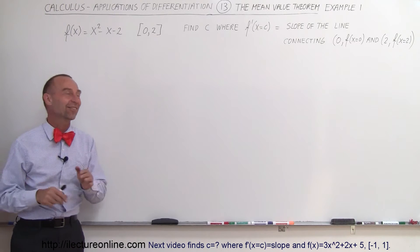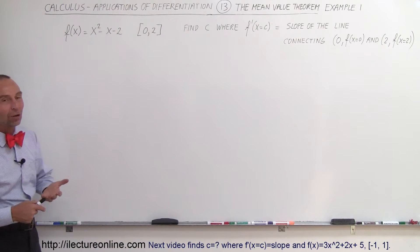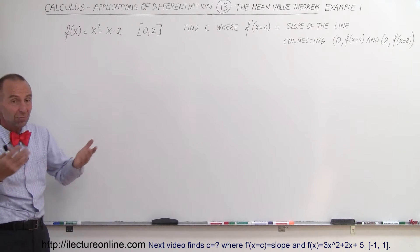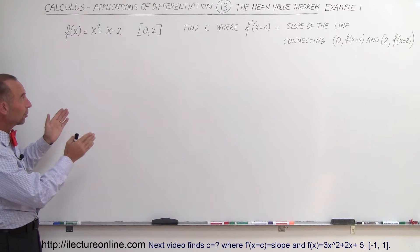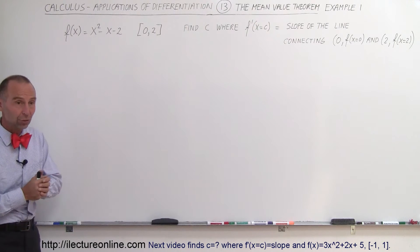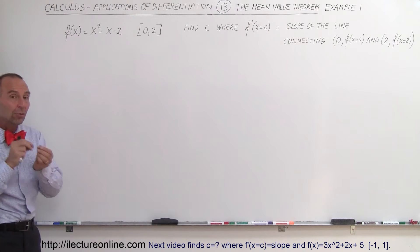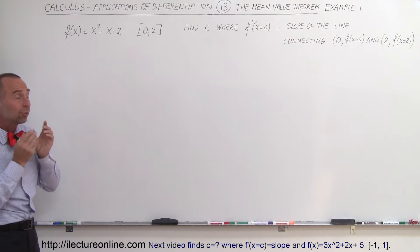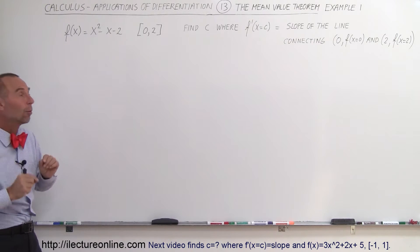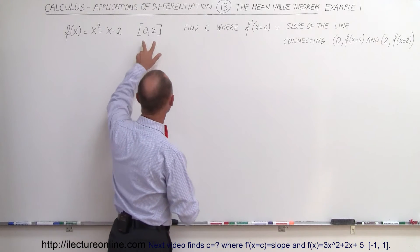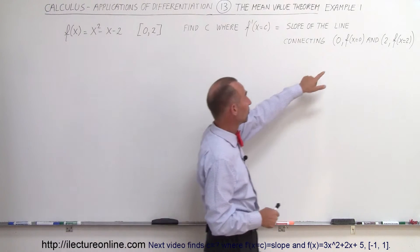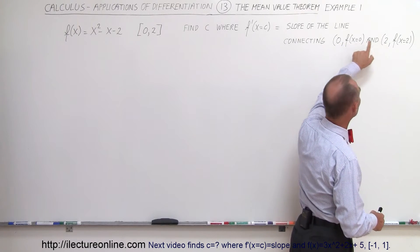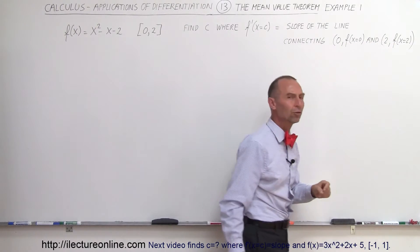Welcome to the lecture. Here's a nice example of how to implement the mean value theorem. We're supposed to find the number c on the interval between x equals 0 and x equals 2, such that when we take the derivative and plug that number in, we'll get the exact same slope as when we find the slope of the straight line connecting the two points on the curve: the point (0, f(0)) and (2, f(2)).